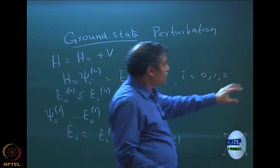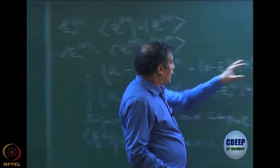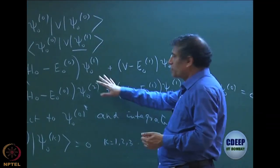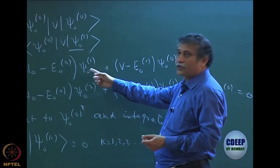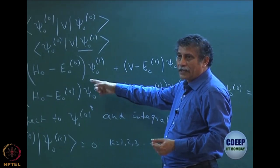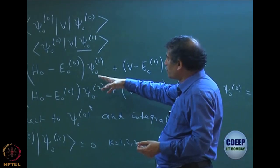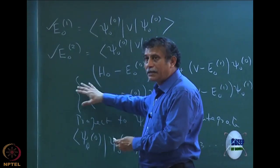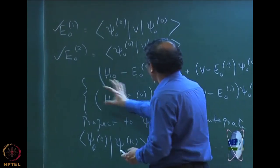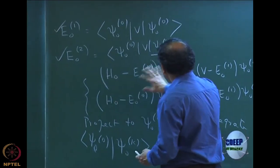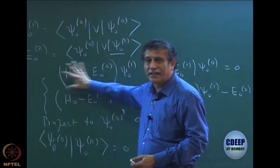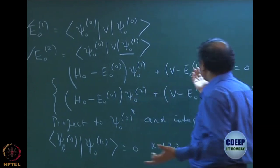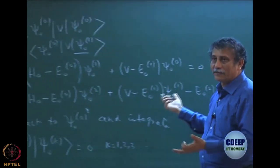However, I have an equation which involves ψ01. I have to use this equation to actually obtain ψ01. This was not used before because I only multiplied with ψ00 star, and if I multiply by ψ00 star this term becomes zero — the integral is zero regardless. So I did not need to know ψ01 to get E01.